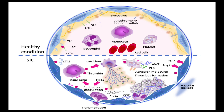Neutrophils release NETs, which further drive clot formation and inflammation. Platelets join in by releasing von Willebrand factor and platelet factor IV, creating blood clots. Damaged endothelial cells also release more VWF and angiopoietin-2, worsening the condition. This shift from preventing clots to excessive clotting is central to SIC, leading to dangerous clots and bleeding risks. Managing this change early in sepsis is crucial.